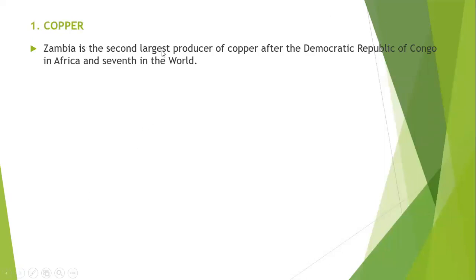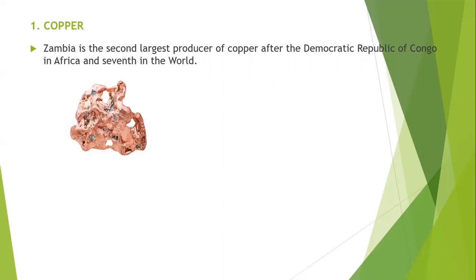Zambia is the second largest producer of copper after the Democratic Republic of Congo in Africa, and seventh in the world. In the past, Zambia was actually the largest producer of copper in the entire world, just after Chile. But because there is now lower production, Zambia lies second in Africa after the DRC and seventh in the world.